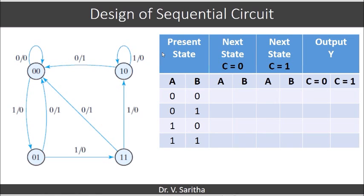The design procedure starts with the state diagram. Sometimes the problem statement could be given in the form of the state diagram itself, so the first step is already done. To get the state table from the given state diagram, we will see how it happens. The states are 0,0 and 0,1 and 1,0 and 1,1.